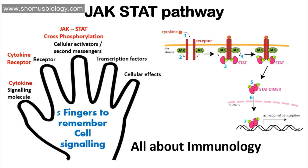The fourth important parameter is the transcription factor, which in this case is the STAT protein dimer — the STAT dimer acting as a transcription factor. Once JAK gets activated and phosphorylates the cytosolic domain of the cytokine receptor, the STAT protein already present in the cytosol binds to that phosphorylated cytosolic domain. The STAT protein then gets phosphorylated, and two such phosphorylated STAT proteins combine to form a dimer. The STAT dimer then enters the nucleus, binds to the promoter, and controls the transcription of certain downstream genes.